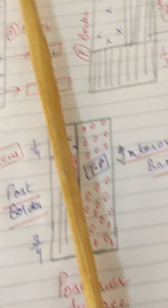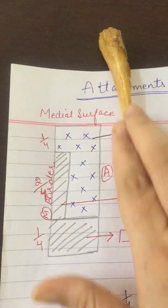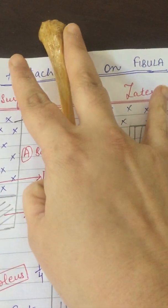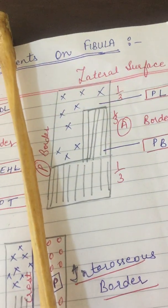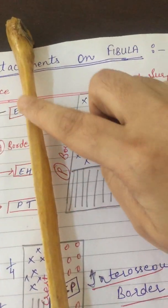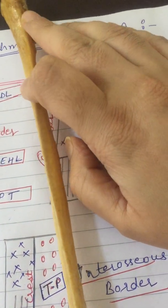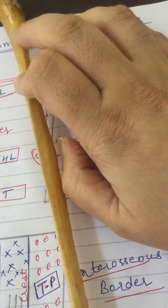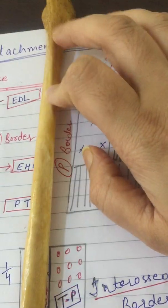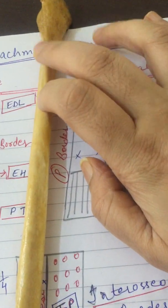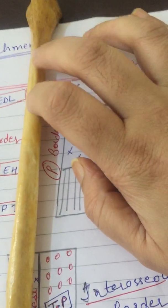As I have shown you, this is the anterior border, and in the lower part it gets divided into a triangular area. The anterior intermuscular septum of the leg is attached to the whole margin of the anterior border. The superior extensor retinaculum attaches on the anterior margin of the lower triangular area, and from the posterior margin of the triangular area is the attachment of the superior peroneal retinaculum.